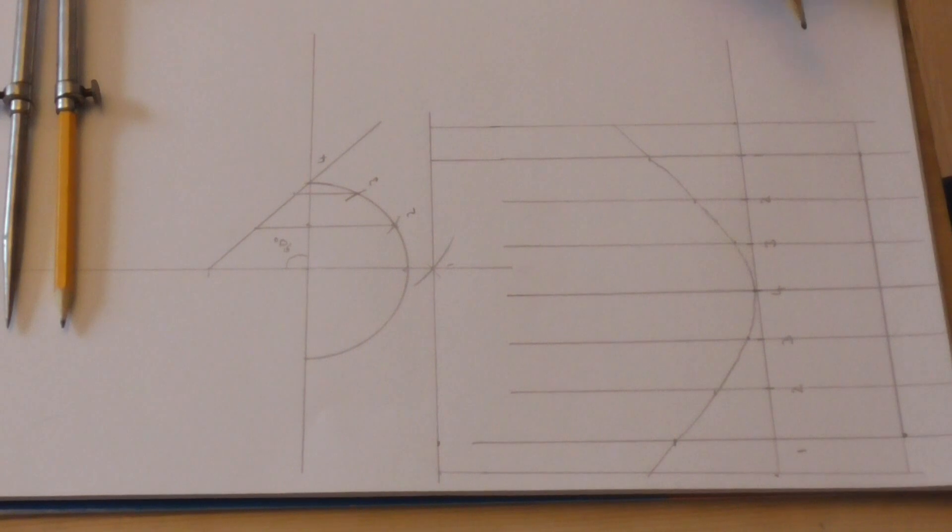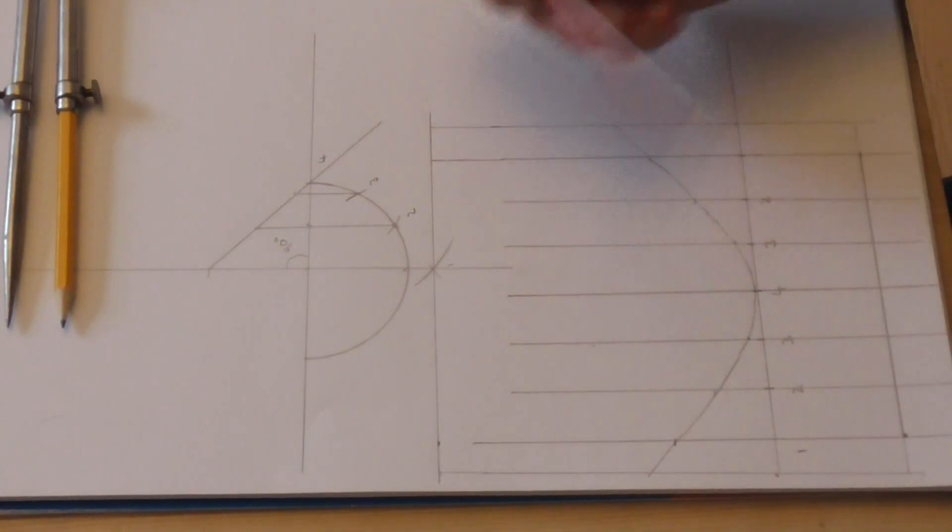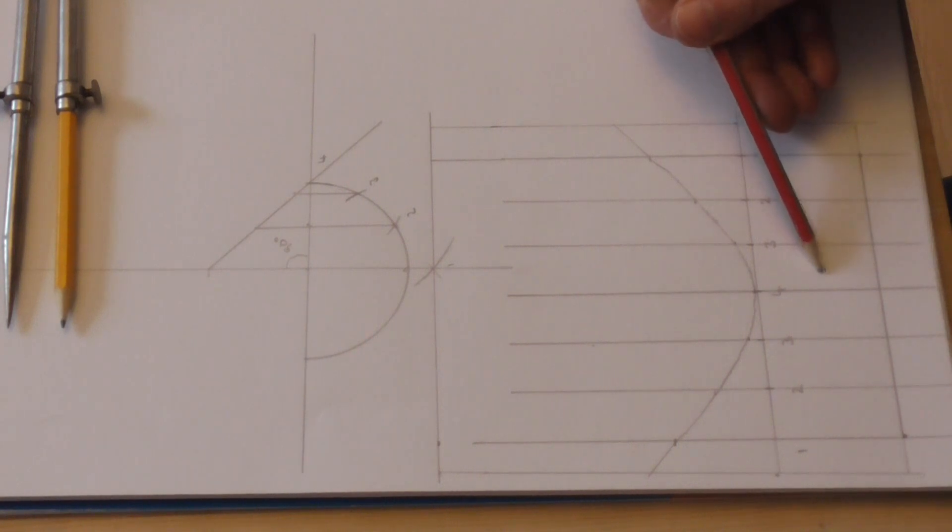And we have both halves of our quarter pattern. The back, and the throat. All that is left now is to cut it out.